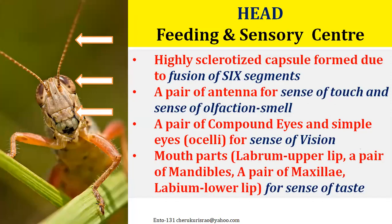The head is a fused capsule-like arrangement — six segments fused closely together to form the head. The head will have a pair of antennae, which are very important sense organs extraordinarily useful for touch sense and smell sense. The head also has a pair of compound eyes and some small eyes which we call ocelli. These compound eyes and ocelli provide the sense of vision.